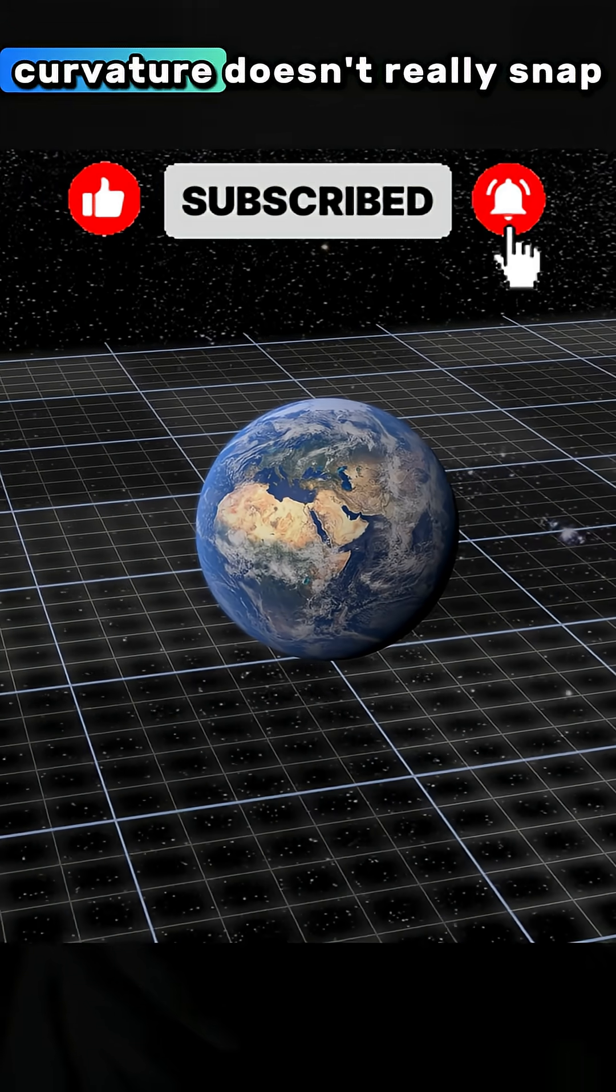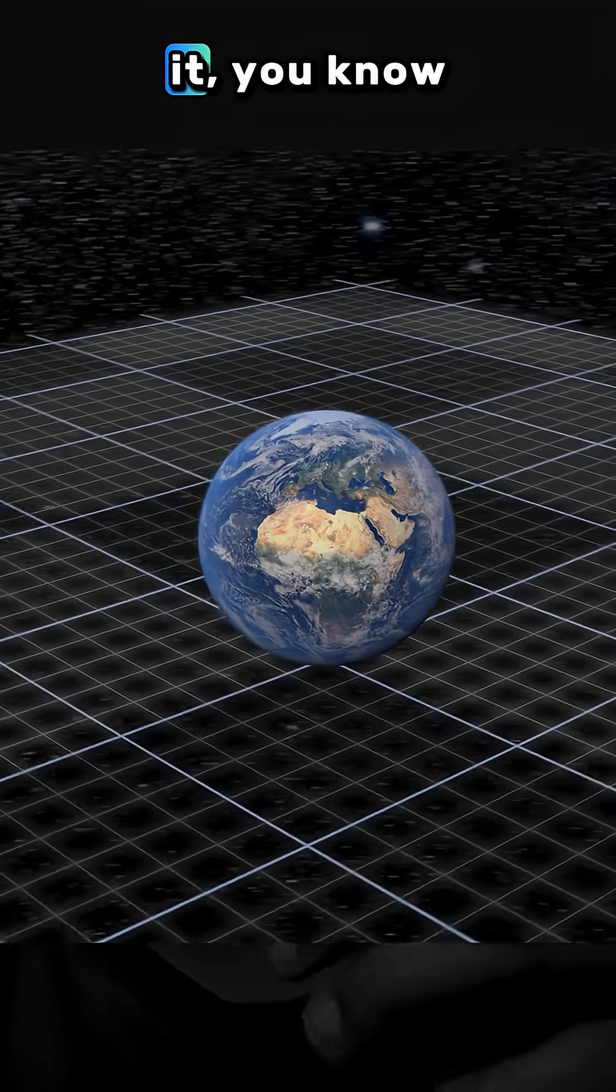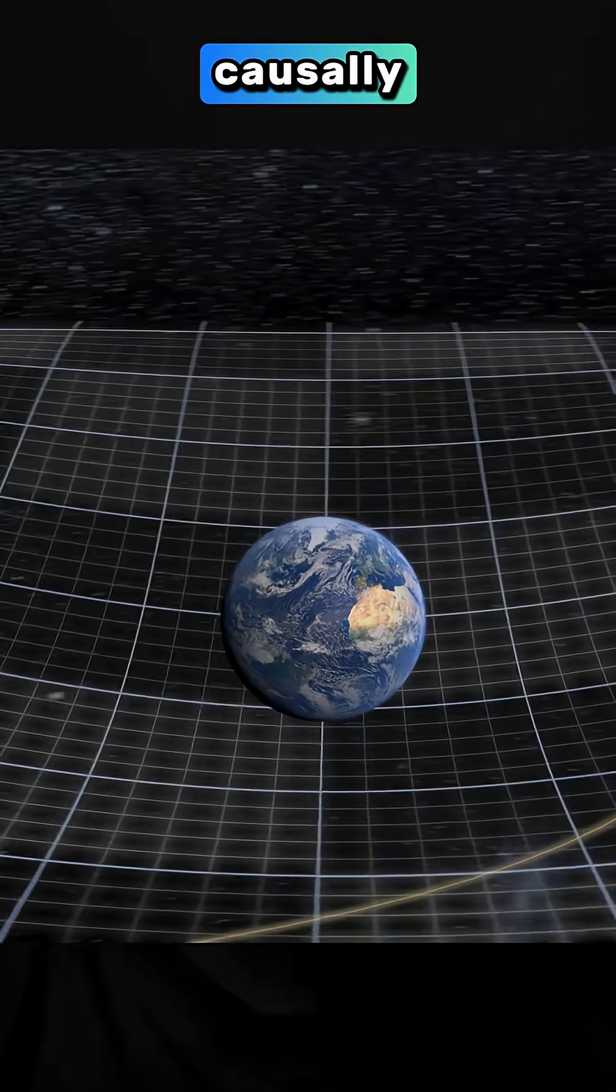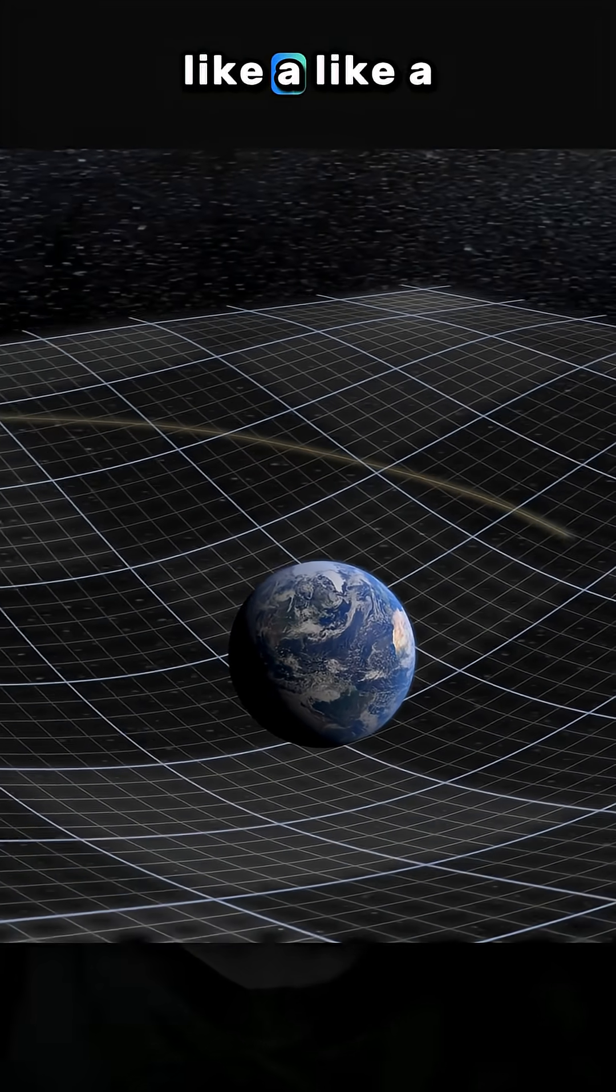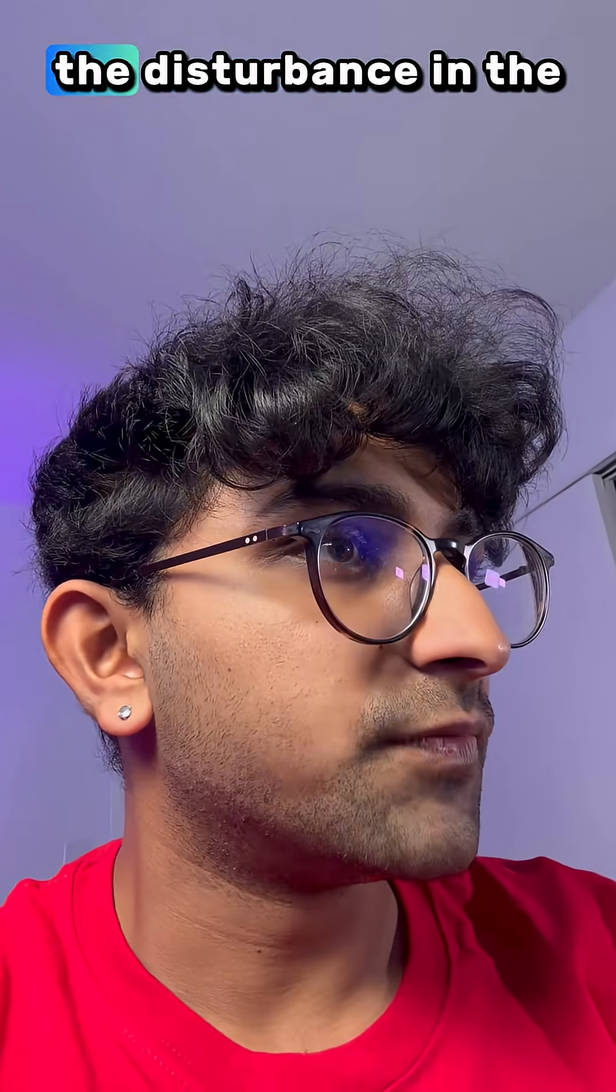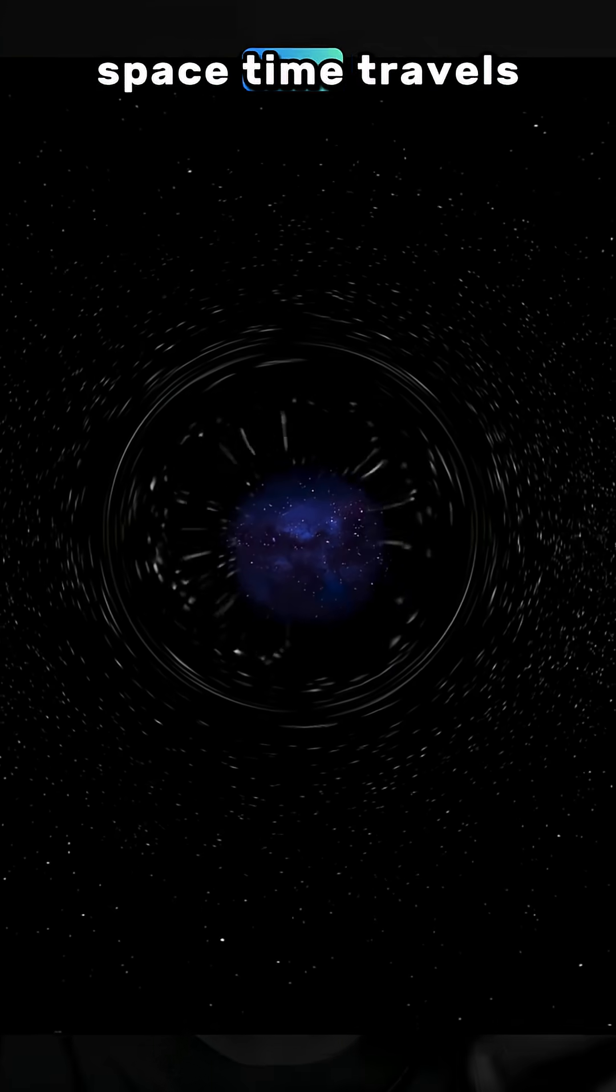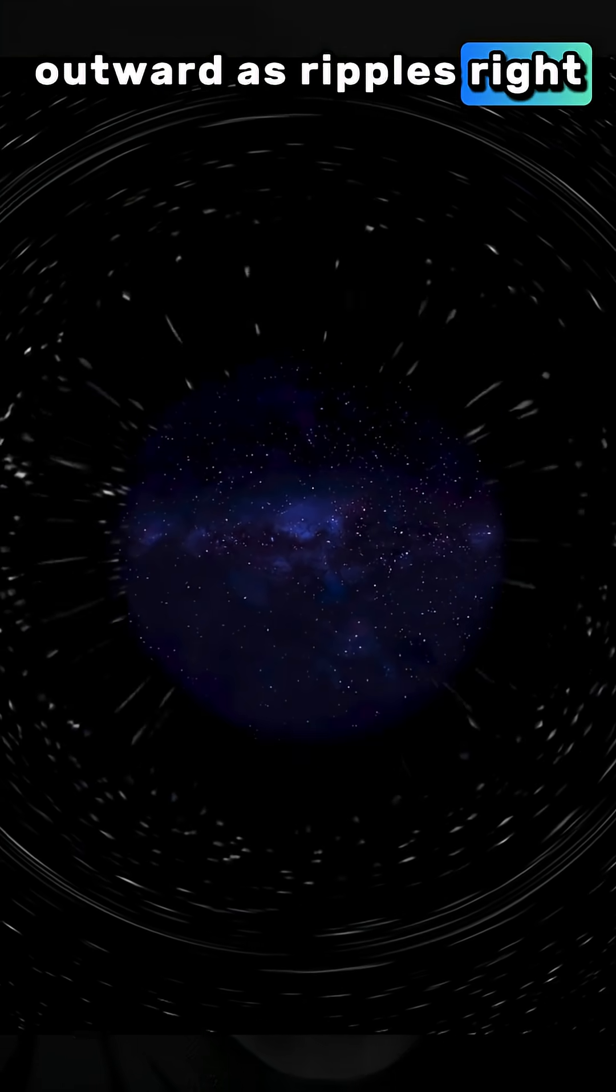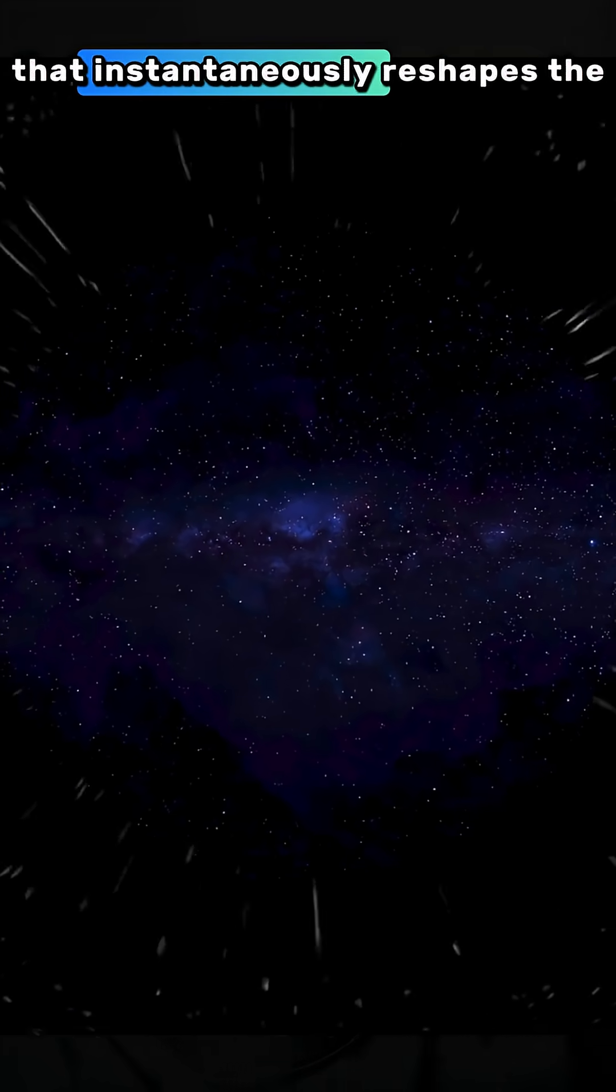Curvature doesn't really snap into place faster than light. Changes propagate causally. Think of space-time like a stretchy sheet. If you drop a mass in like the sun just pops into place, the disturbance in the space-time travels outward as ripples. It's not a flash that instantaneously reshapes the whole sheet.